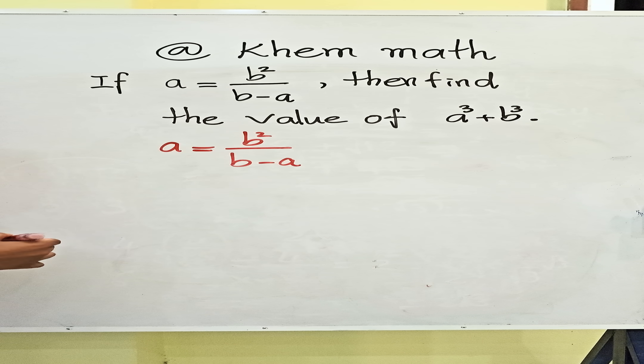a equals b squared divided by b minus a. So, I change b minus a to the left hand side. So, I get a times b minus a equals b squared.